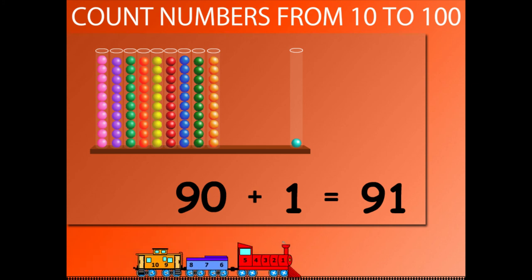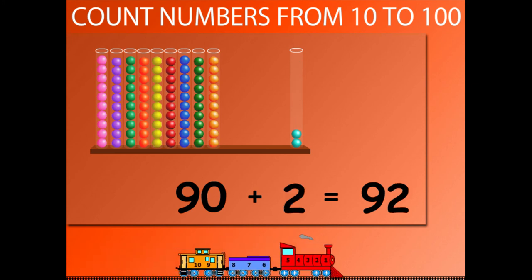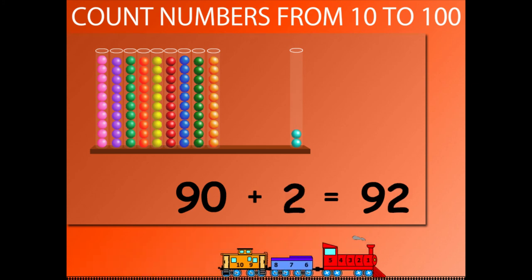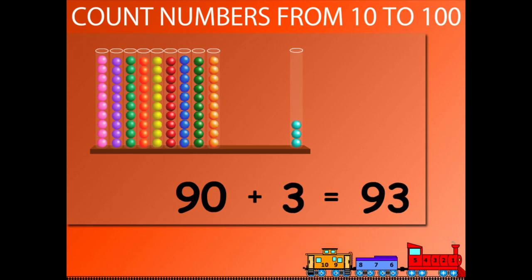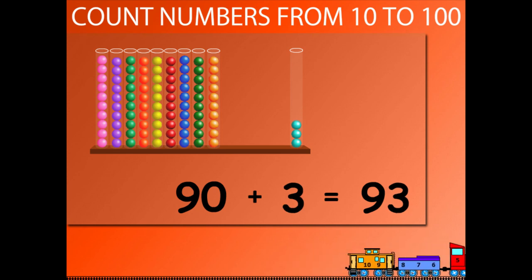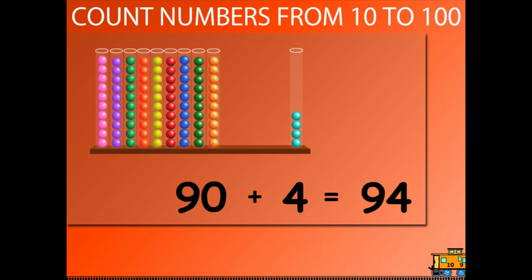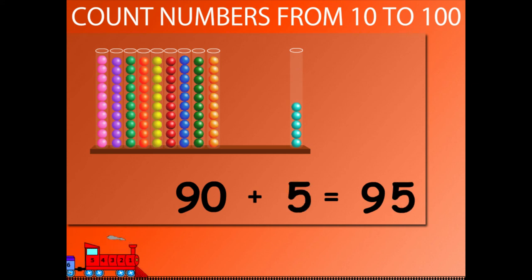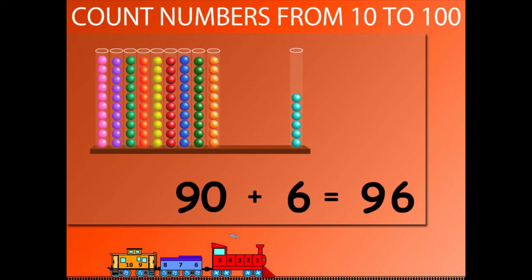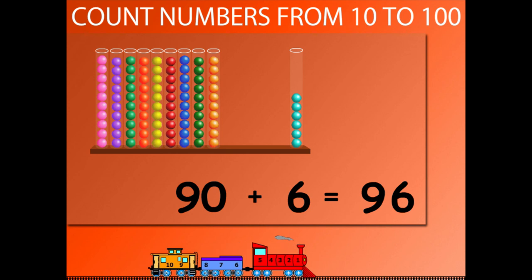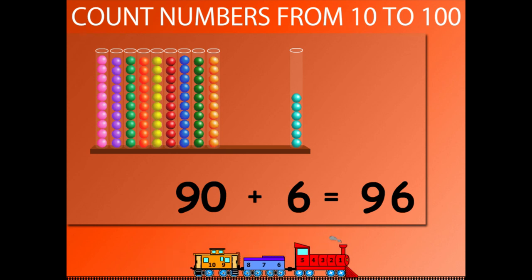90 plus 2 is equal to 92. 90 plus 3 is equal to 93. 90 plus 4 is equal to 94. 90 plus 5 is equal to 95. 90 plus 6 is equal to 96.